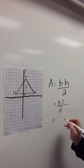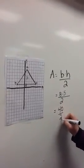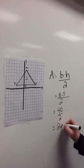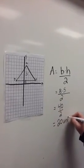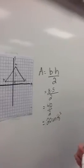8 times 5 is 40. 40 divided by 2 is 20. So my answer would be 20 units squared.